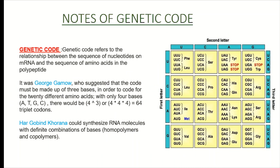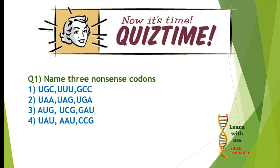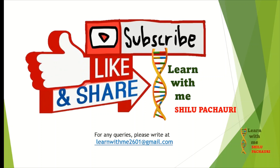Now here are the notes of genetic code where its definition, introduction, a diagram, and the characteristics of genetic codes are written. You can pause the video, take a screenshot, or make your own notes. Now it's quiz time — the question is: name three nonsense codons. Options are given; you have to give the correct answer in the comment section. If you liked the video, please like, share, and subscribe so you keep getting upcoming videos. Thanks for watching, learn with me, bye bye, take care.